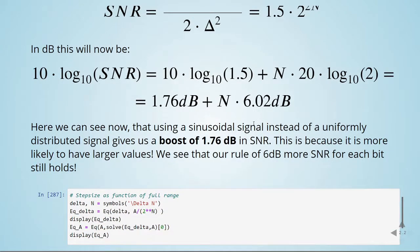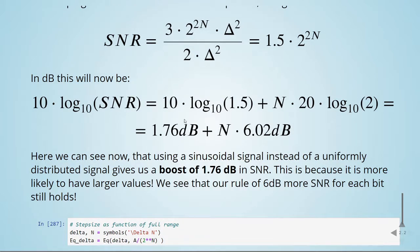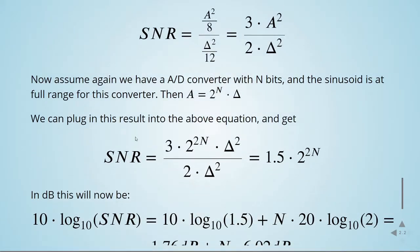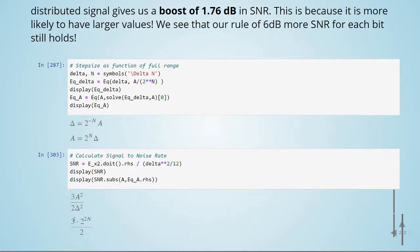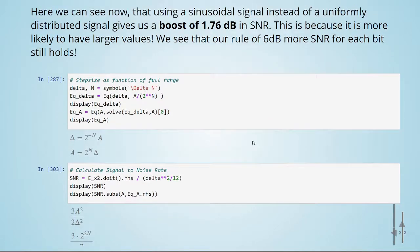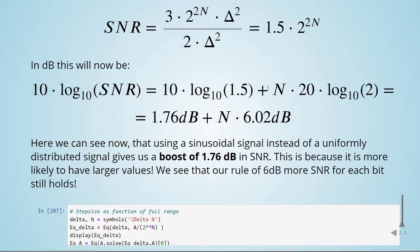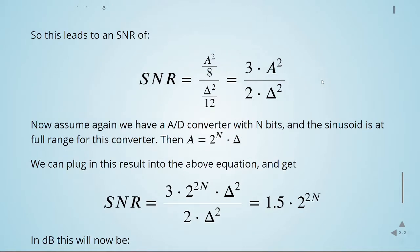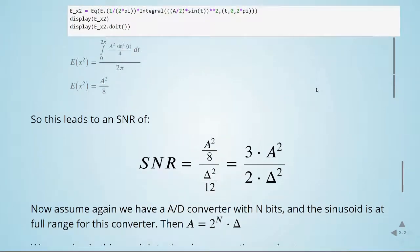Our rule of thumb still applies: for each additional bit we get 6.02 dB more SNR, but for a sine wave we additionally get a boost of 1.76 dB. Using the equation for SNR and substituting the step size and full range, we confirm that the result is 1.5 times 2 to the power of 2n — the SNR equation for a sine wave with amplitude going from minus a/2 to plus a/2, meaning the signal spans the full range A.